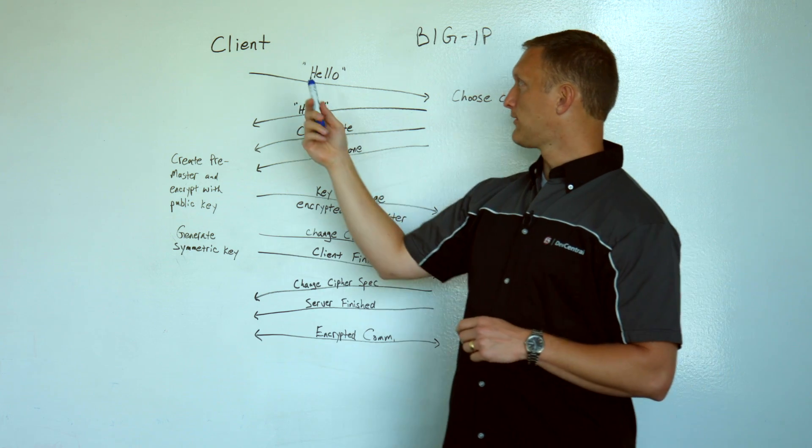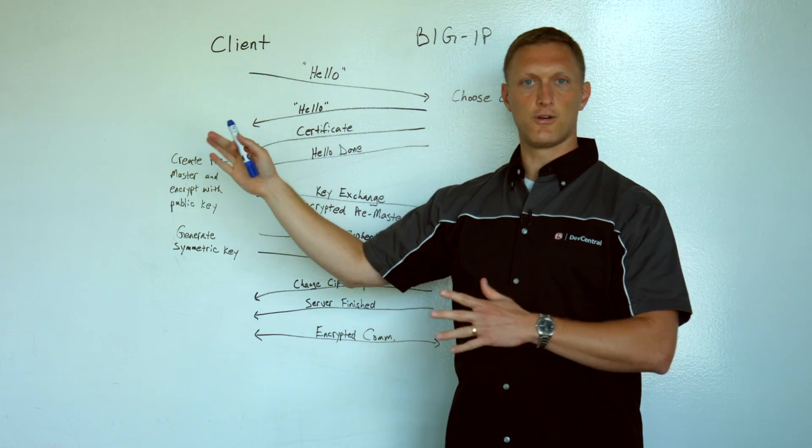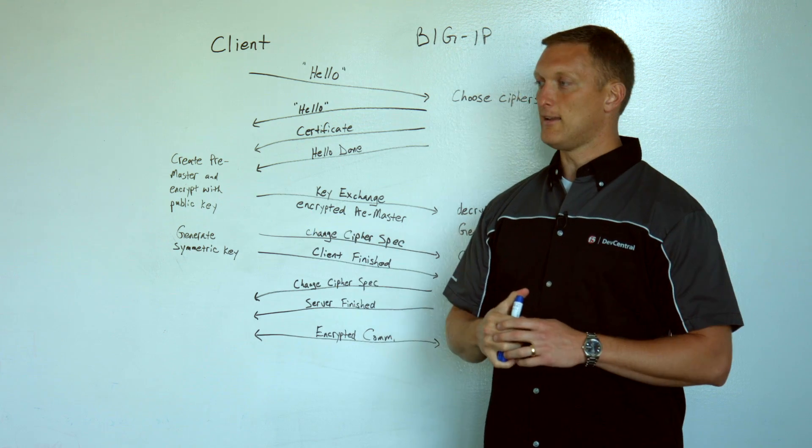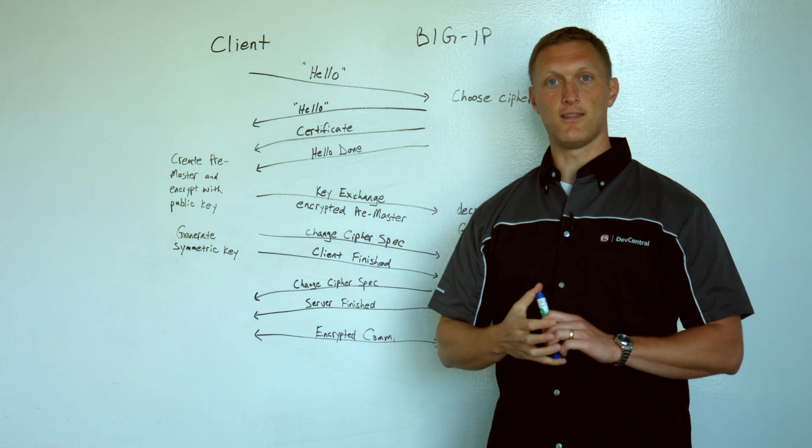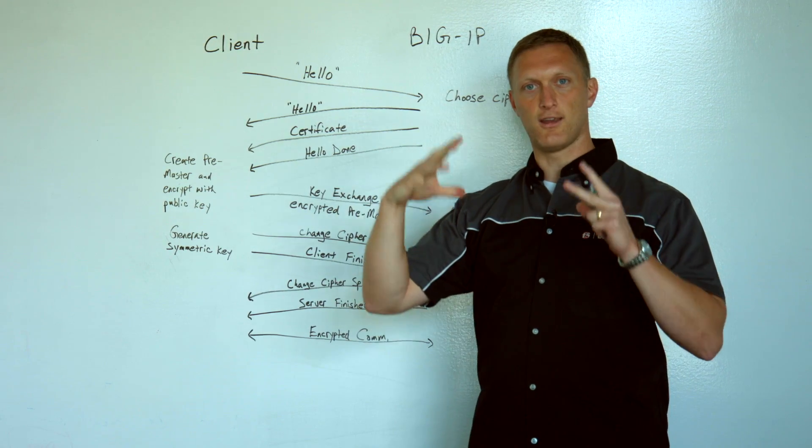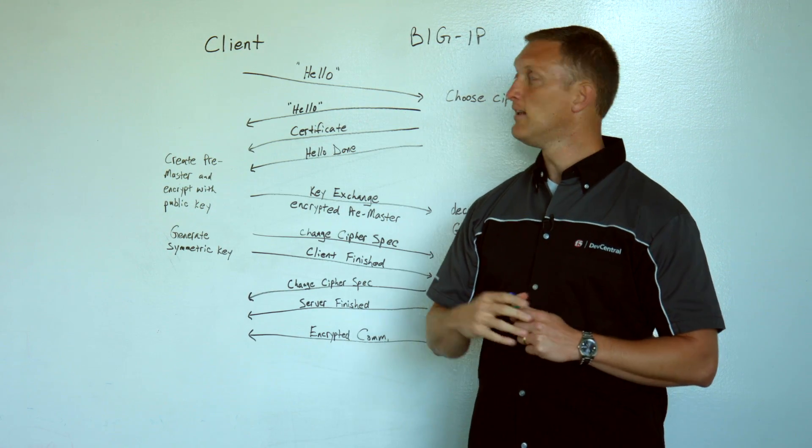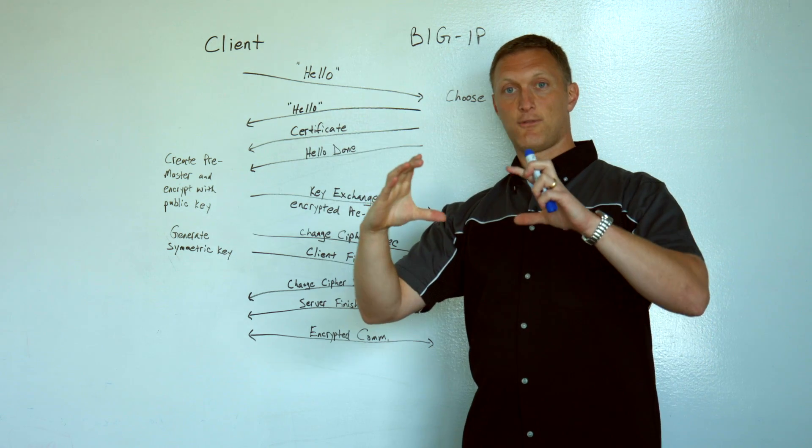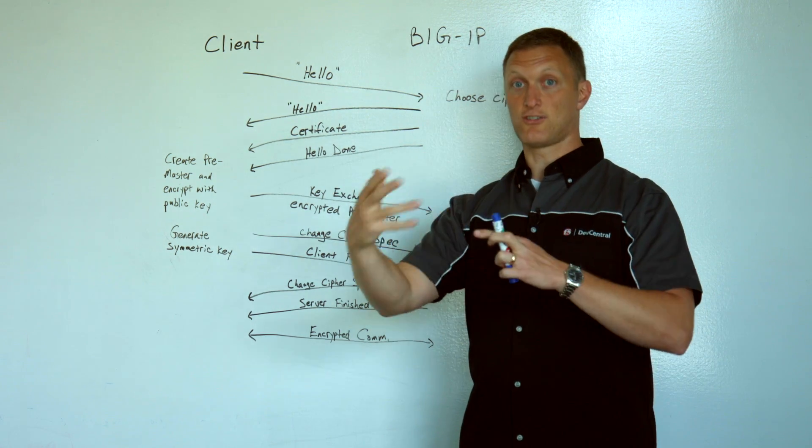Another key thing that's included in the client hello is the list of ciphers that the client can support. Let's say, for example, this is like an older client, Internet Explorer 8, for example. It may not be able to support, say, this brand new elliptic curve Diffie-Hellman ephemeral, all this kind of crazy newer advanced encryption. So it may say, hey, hello BIG-IP, here are the only cipher suites that I can support, but let's talk securely anyway.